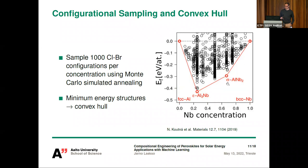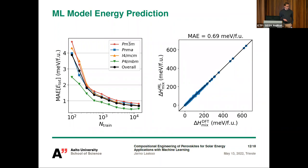Looking at our results: on the left are the energy learning curves for the model across all four phases. For all phases we reach energy prediction errors of less than 1 meV per formula unit (per five atoms). The scatter plot on the right compares DFT energies to machine learning predictions — they fit nicely on the diagonal, with an MAE of only 0.69 meV per formula unit for the fully trained model. Best of all, predictions are over four orders of magnitude faster than DFT.